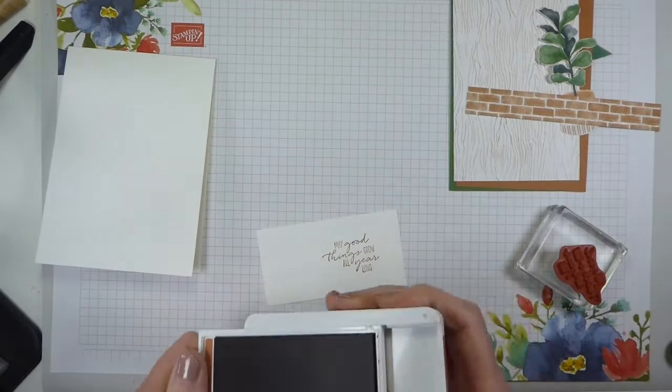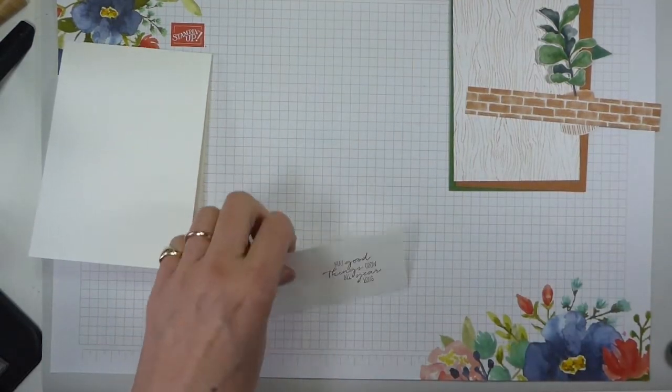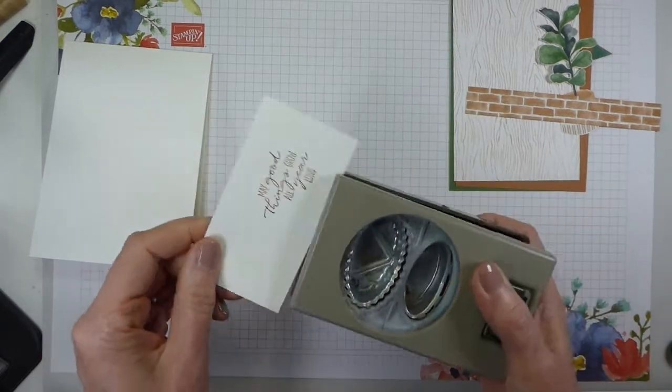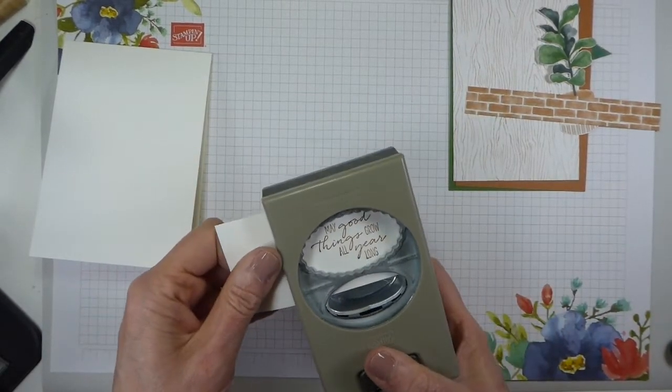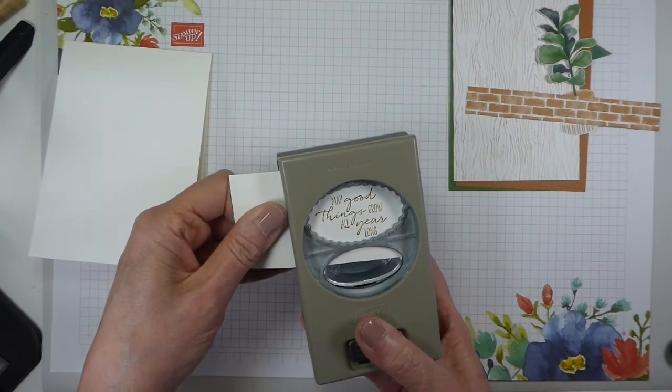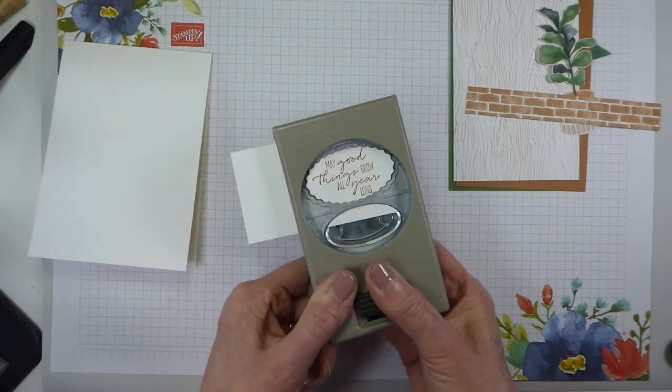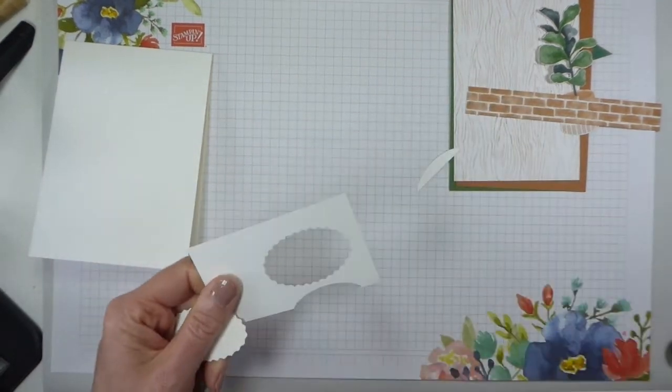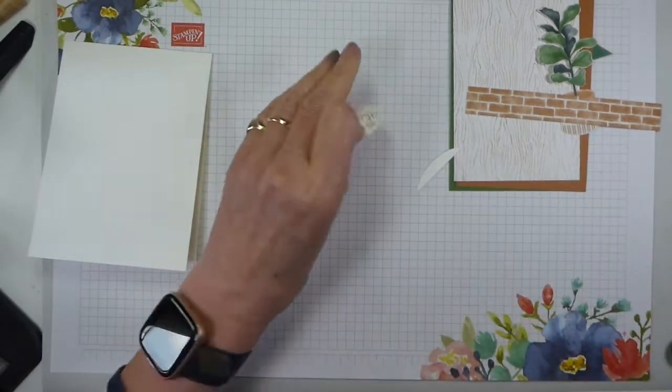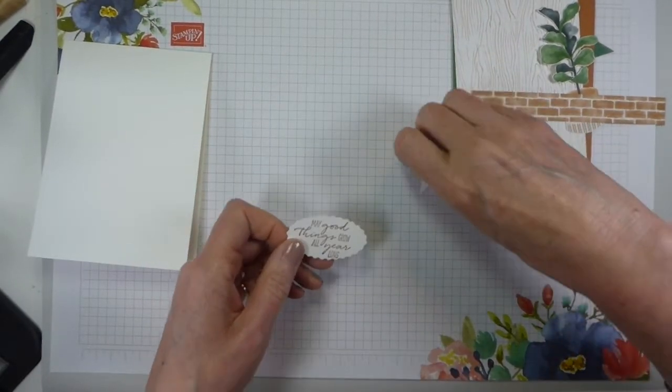So there we go, cinnamon cider with cinnamon cider. I do like a little bit of tone on tone. And then I've got the oval punch, and I did try this beforehand just to make sure it would fit, and it just does. Getting it straight would be lovely. So that is our sentiment all done.